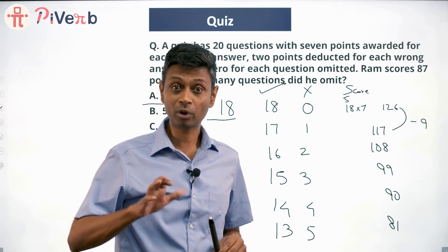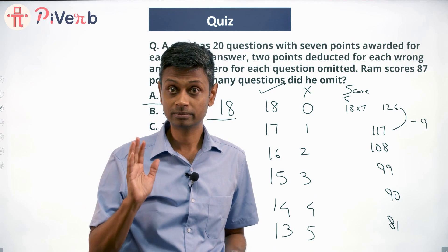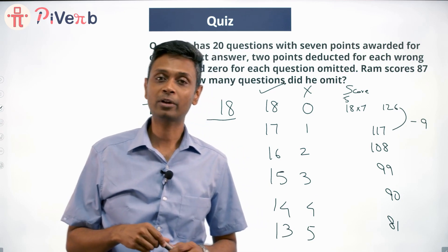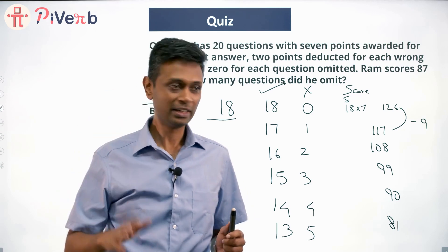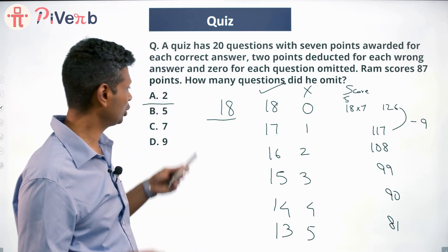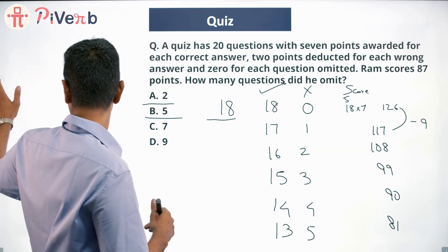Now, once you get more comfortable with remainders, you can think of 87 as a multiple of 9 plus something and then jump to the answer. That's an approach sitting there, but I'm assuming you're not comfortable thinking in terms of remainders. So we're going to skip that and come back to this idea. I'll try two, that doesn't work. Let's try five. If it is five, that means he skips five questions, that means he attempts 15.